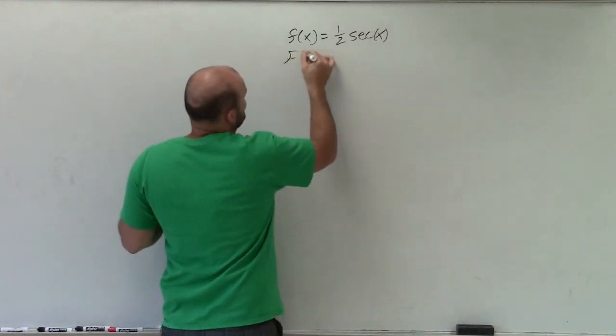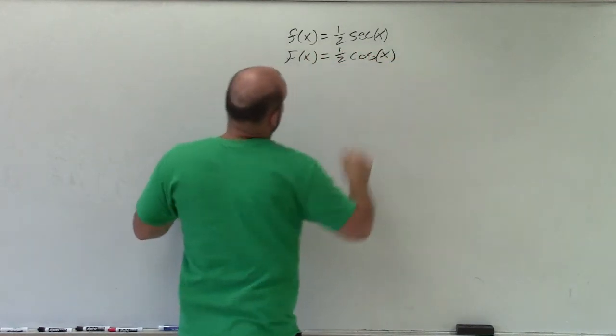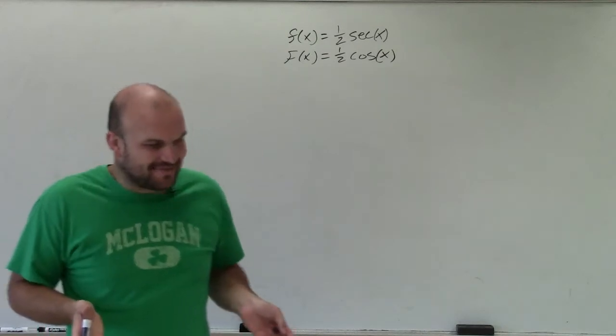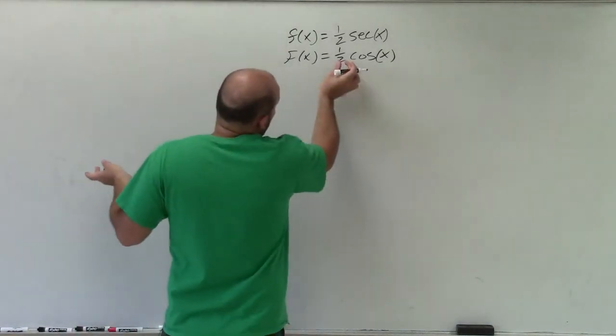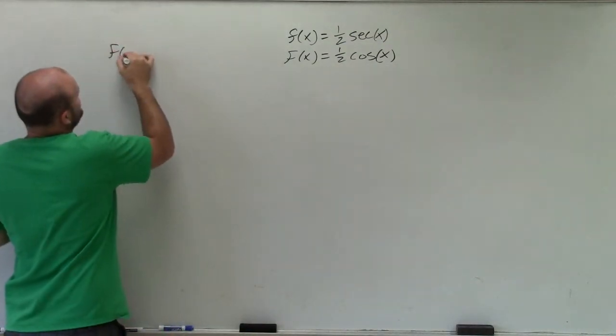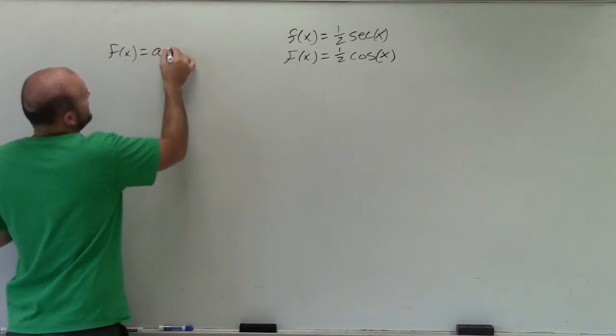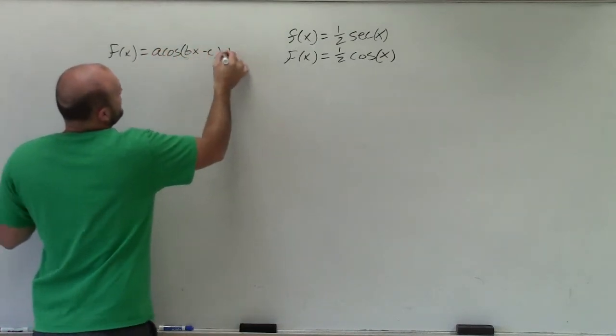So technically, what I really want to graph is f(x) = (1/2)cos(x). Now, we notice that this graph is exactly the same as the parent function. The only real difference is this 1/2. And what exactly is that 1/2 doing? Well, remember when we look at the transformation function, f(x) = a·cos(bx - c) + d.